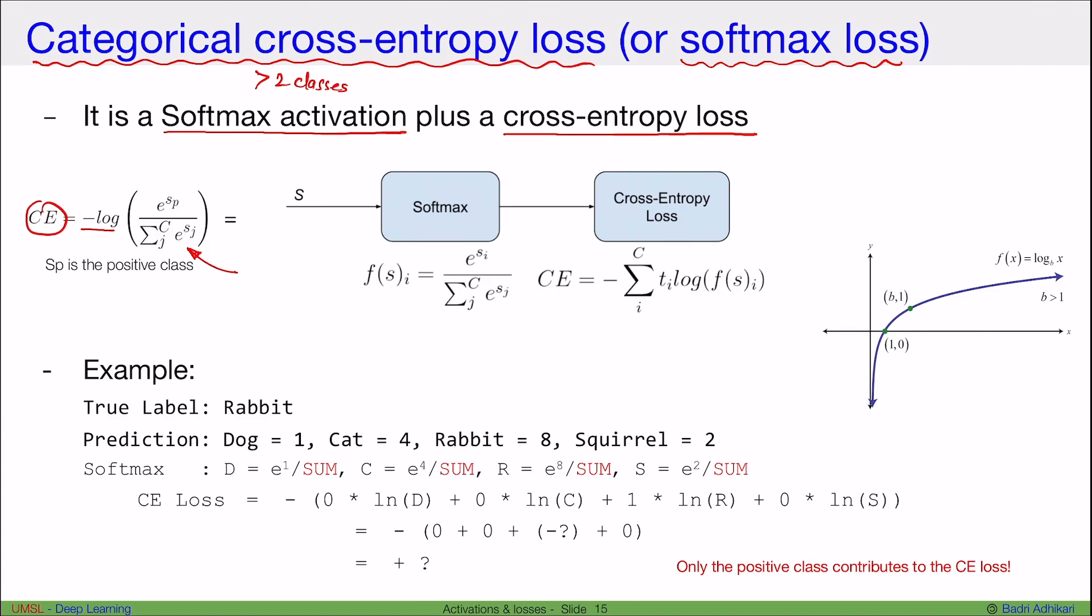Now say we have an output from a neural network model, and let's say the model has total number of classes C, so it has C classes total. Then the output of the softmax will be probabilities for each of the classes. The way we obtain those probabilities is we simply exponentiate the output of each neuron for each class, and we divide by the sum of all those exponents to obtain probabilities. So this f(s_i) is the probability for each class.